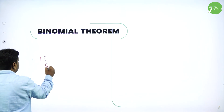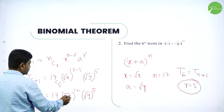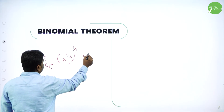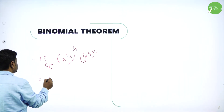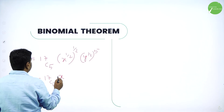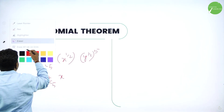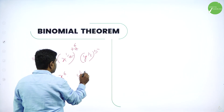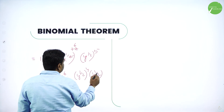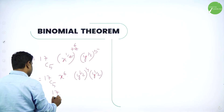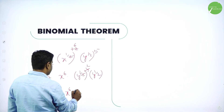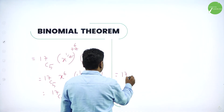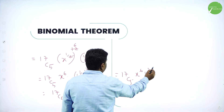Simplify: 17 minus 5 is 12, so we have 17C5 times root x power 12 times root y power 5. Root x equals x power half, so x power half raised to 12 gives x power 6. Root y power 5 equals y power half raised to 5, which is y power 5 by 2. We can also write this as y square times root y. So the 6th term is 17C5 times x power 6 times y power 5 by 2.